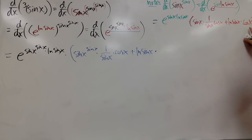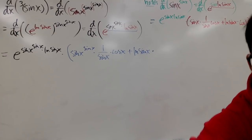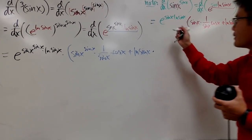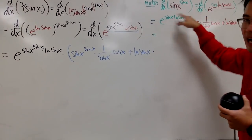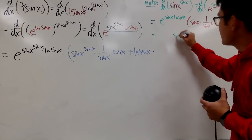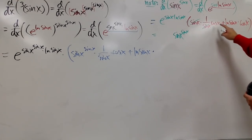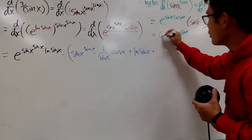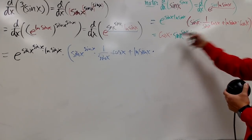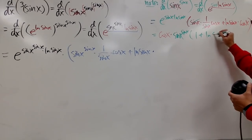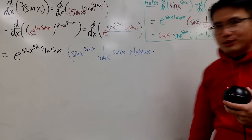Then you add the second function, which is ln sin x, times the derivative of the first, which is cos x. Now this e to the sin x ln sin x is just sin x to the sin x. Notice that sin x and 1/sin x cancel, and both terms have cos x, so I can factor that all the way to the front. The rest is just 1 plus ln of sin x. So the derivative of sin x to the sin x power is cos x times sin x to the sin x times (1 + ln sin x).